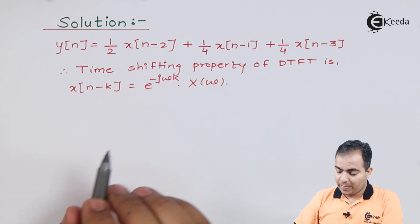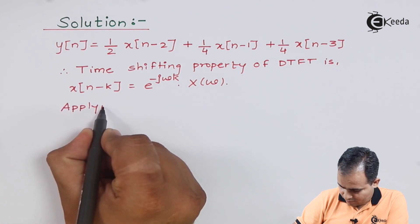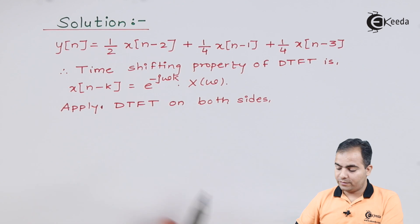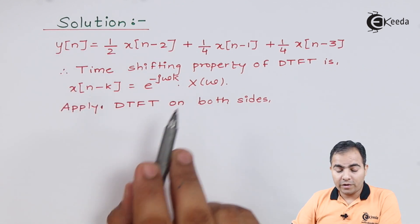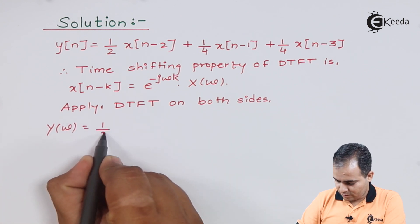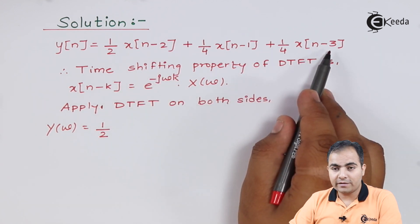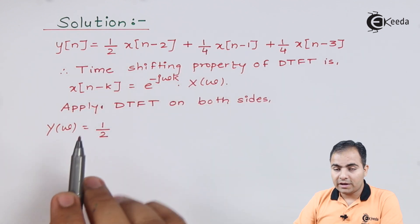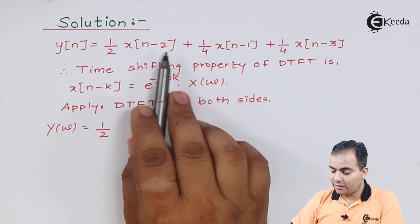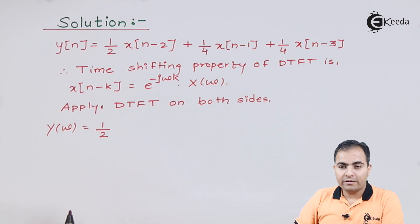Now I will apply Discrete Time Fourier Transform on both sides. y[n] is represented as Y(ω) whereas x[n] is represented as X(ω). I'm going to use the time-shifting property where my k value is 2 for the first term, k = 1 for the second term, and k = 3 for the third term. We'll write the constant part outside and apply the time-shifting property on x[n-2], x[n-1], and x[n-3] respectively.